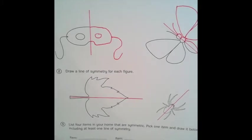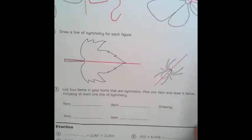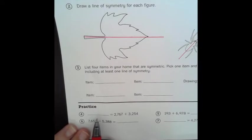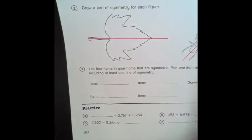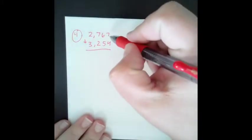And if we go down to the practice, we're reviewing some adding and subtracting. So, it's asking you blank equals 2,767 plus 3,254. So I went ahead and stacked those numbers on separate paper. It's easier for me to add that way.